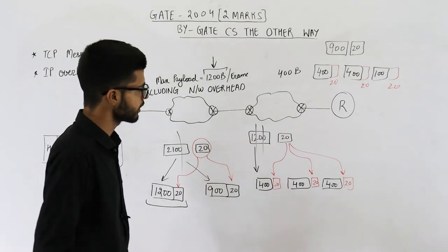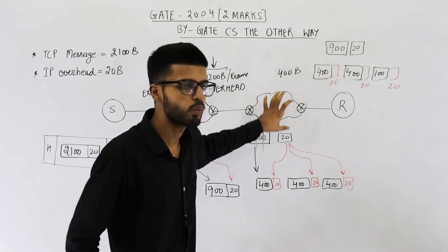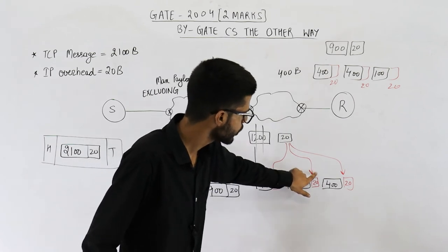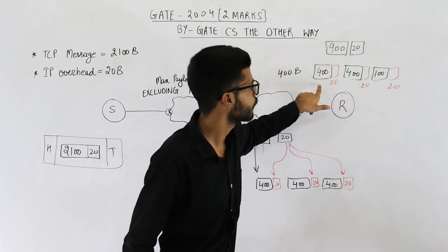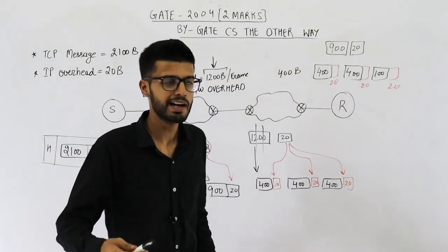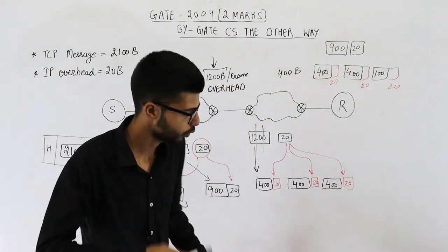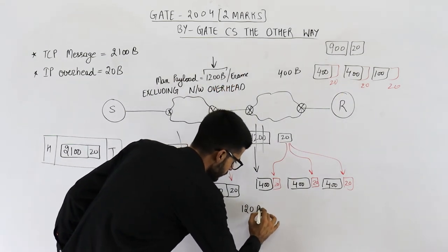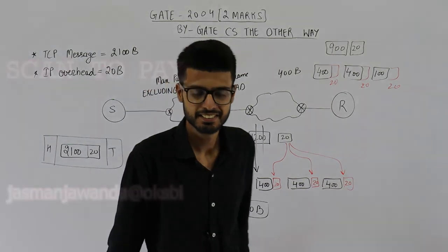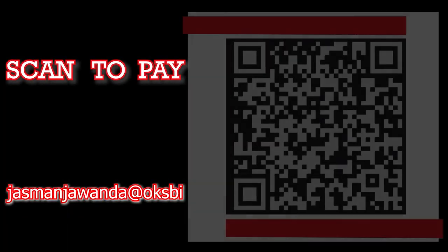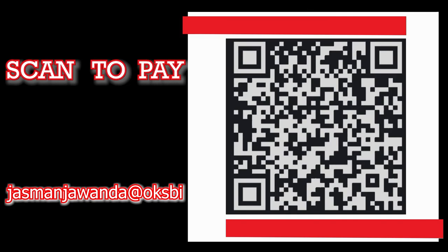They were asking: in the second network, what is the total IP overhead? For the first packet: 20 plus 20 plus 20 equals 60 bytes. For the second packet: 20 plus 20 plus 20 equals 60 bytes. The total overhead will be 60 plus 60, which is 120 bytes. So the answer to this question is 120 bytes. Thank you very much for watching this video. Have a good day.